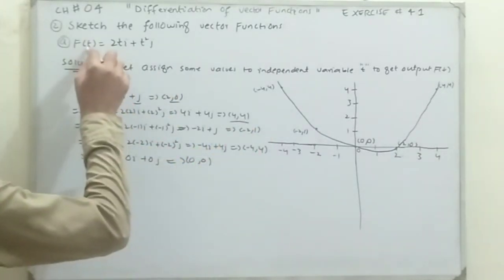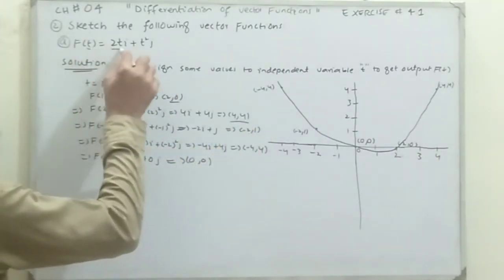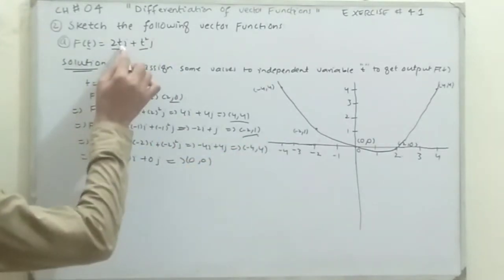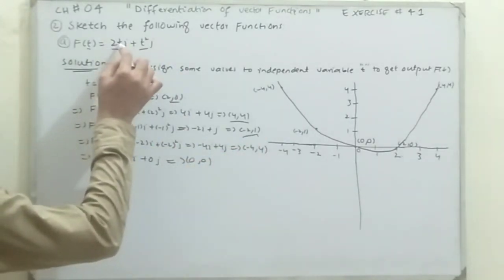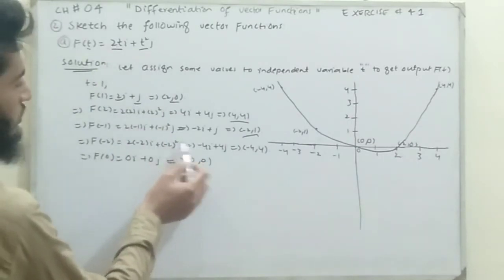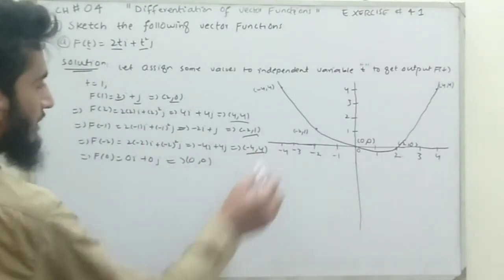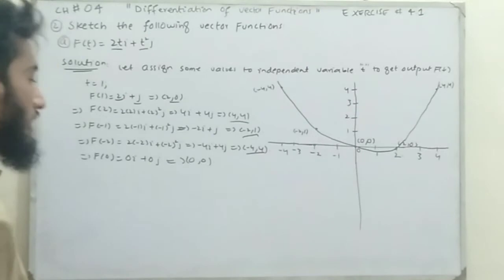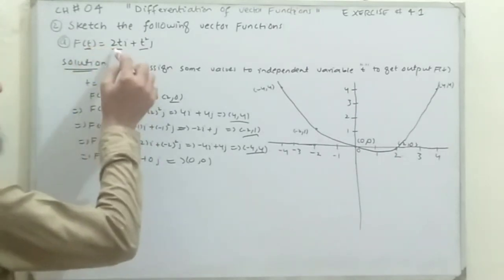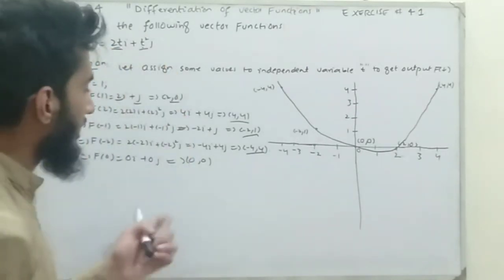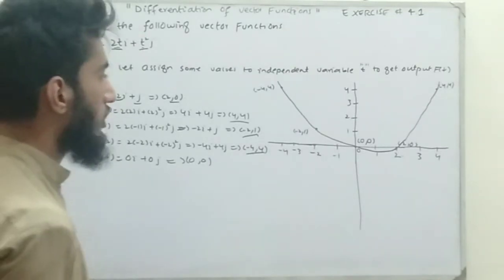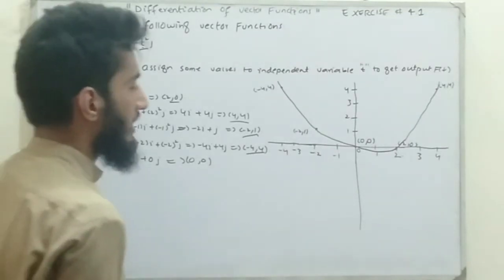If I assign t = -1, it becomes -2·i + 1·j, giving the ordered pair (-2, 1). If I assign t = -2, it gives 2×(-2) = -4, and (-2)² = +4, so the ordered pair is (-4, 4). And if I put t = 0, it gives the ordered pair (0, 0).